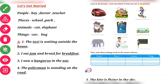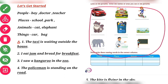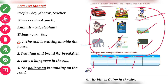First, find the people in this picture. You will find a driver, then a doctor, then a teacher — write these in the people column. For places, you can see school and park — write these in the places column. For animals, cat and elephant. And the last column, things: bag — write it here.